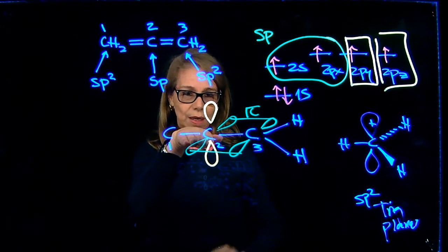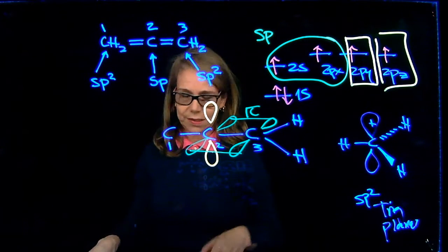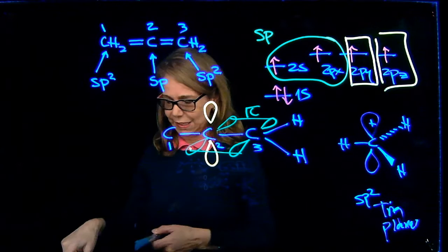To make a pi bond to the other carbon, then they need to be like that. This is what I have drawn in green.